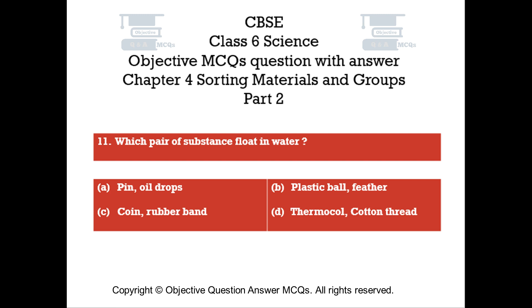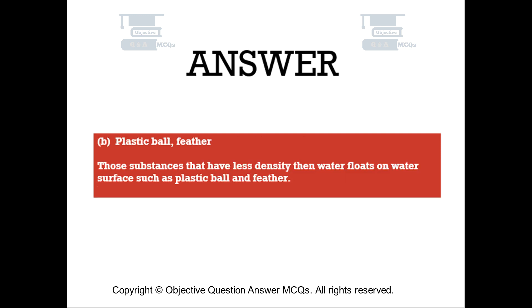Question number 11. Which pair of substances floats in water? Option A: Pin and Oil Drops. Option B: Plastic Ball and Feather. Option C: Coin and Rubber Band. Option D: Thermocol and Cotton Thread. The right answer is Option B — Plastic Ball and Feather. Those substances that have less density than water float on the water surface, such as a plastic ball and feather.